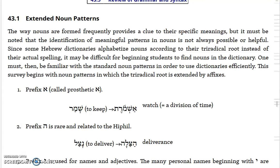Here are some ways in which roots can be turned into nouns. Certain roots will form a noun by adding a prefix or prosthetic aleph in front. So you have the root shamar, meaning 'to keep,' and then you have ashmoret, which is a watch — that is, a period of time.